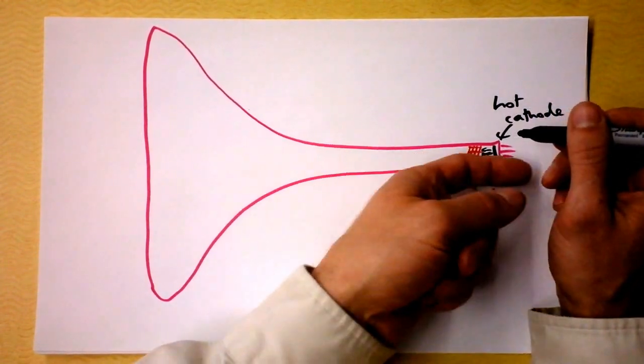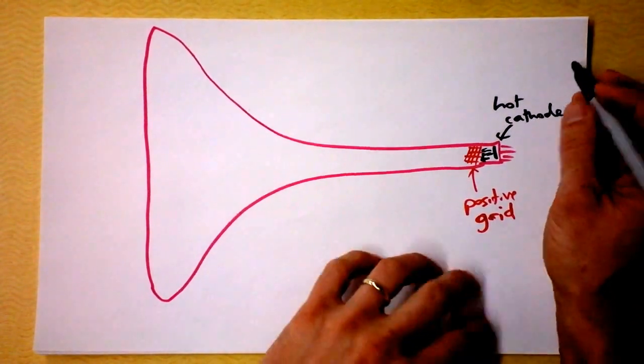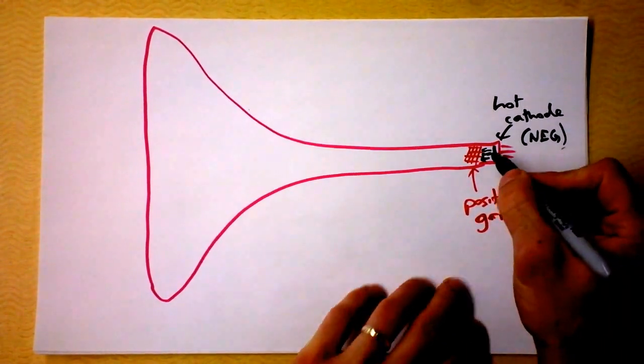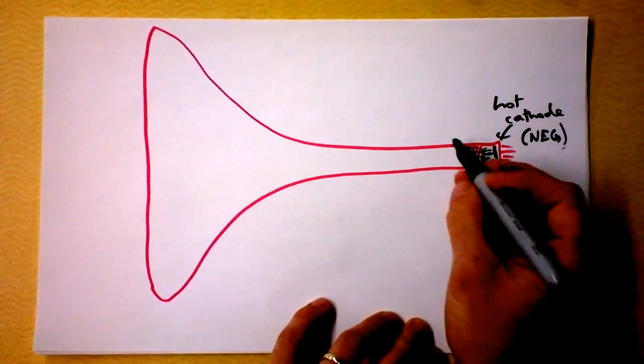The electric field is pointing to the right because this is a positive grid and a negative cathode, and the electrons go pew, pew, pew, and they come out of here.